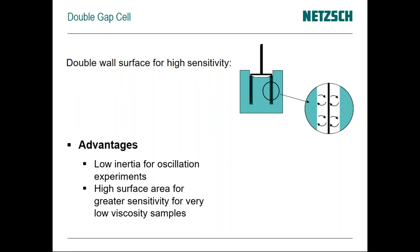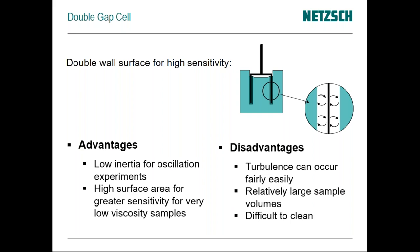The double gap cell's advantages are its hollow construction giving very low inertia and its high surface area, making it ideal for measuring very low viscosity liquids — use this for maximum sensitivity. Disadvantages: the relatively wide gap can cause turbulence — Taylor vortices — when measuring very low viscosity liquids. It takes five to six milliliters of sample and is a little tough to clean if the liquid is sticky or thick. The double gap cell is normally only used for very low viscosity materials.